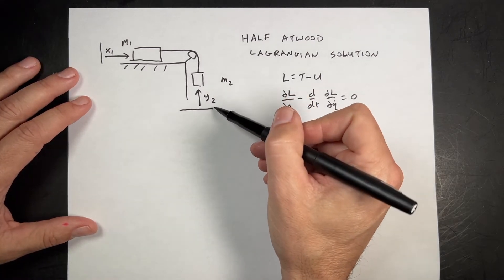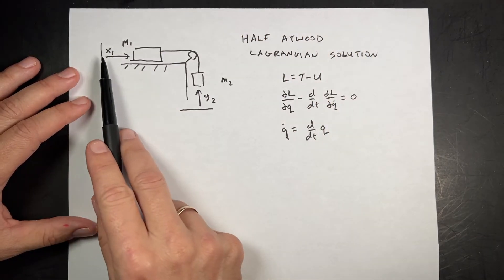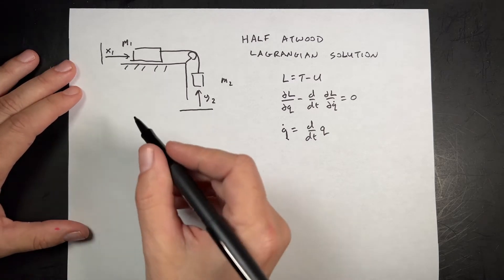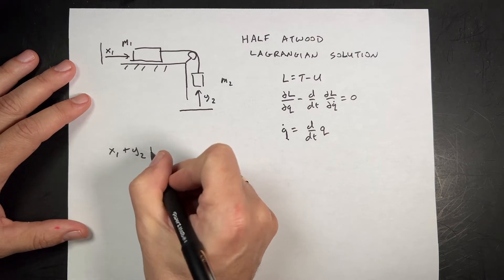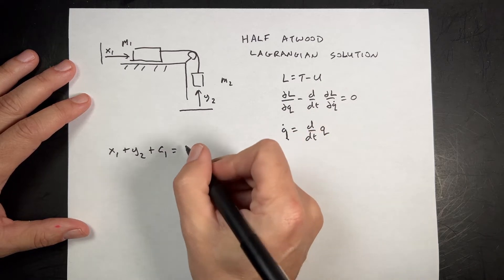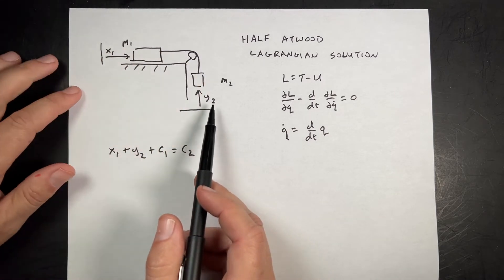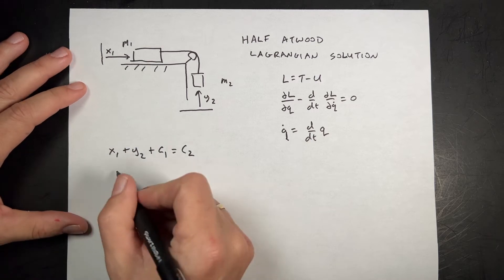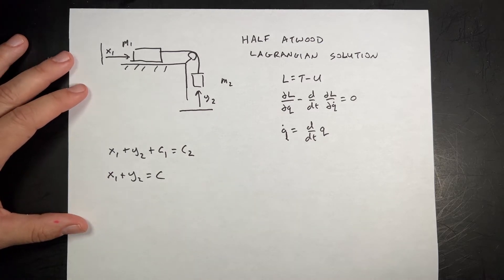I could have over here a variable called x1 to tell me the position of mass one. But here I want just one of them. I know that if I go up here, which is going to be y2 plus this string, and then over here to the wall, that should be a constant length. Because as y2 decreases, x1 should increase. So I can write an equation of constraint: x1 plus y2 plus some constant c1 equals some other constant c2. I can subtract both sides from c1 and write this as x1 plus y2 equals c.